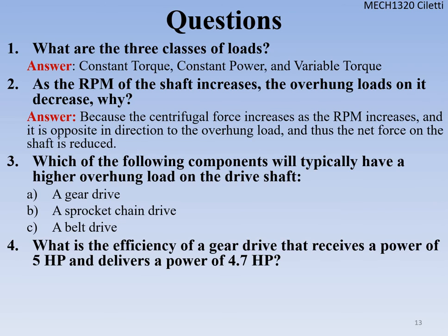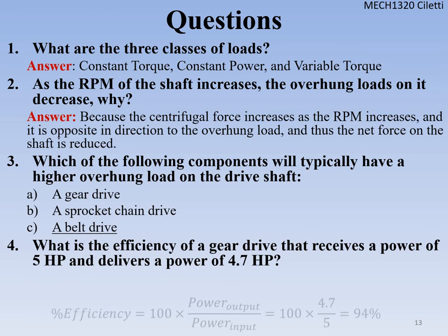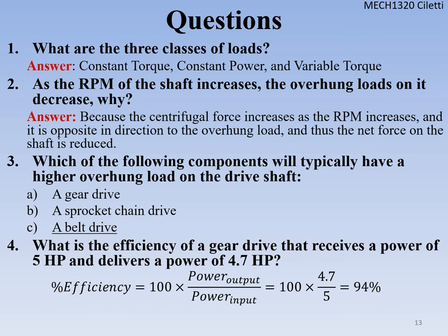Which component typically has a higher overhung load on the drive shaft — a gear drive, sprocket and chain drive, or belt drive? The answer is the belt drive. And the efficiency of a gear drive that receives 5 horsepower and delivers 4.7 horsepower: efficiency = (4.7 / 5) × 100 = 94% efficient.